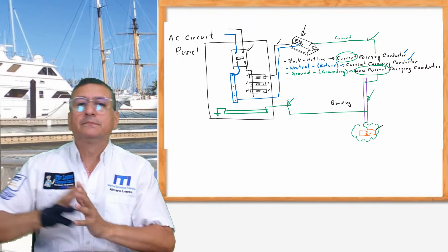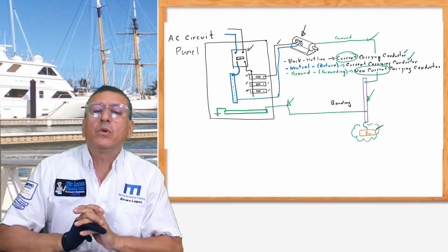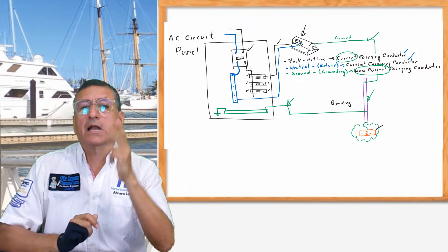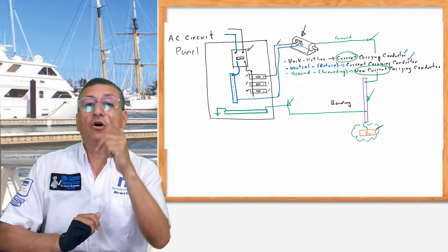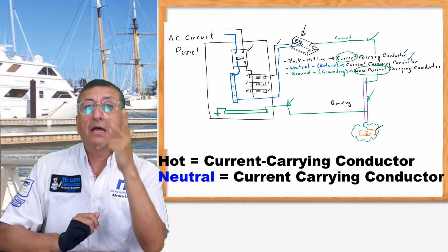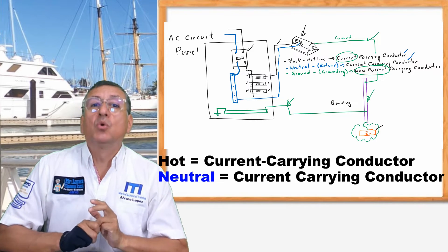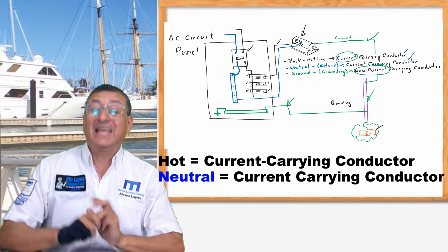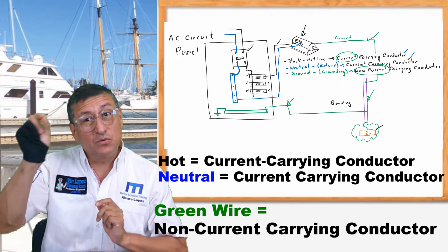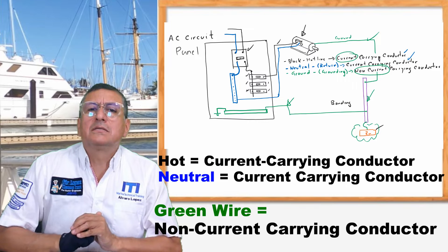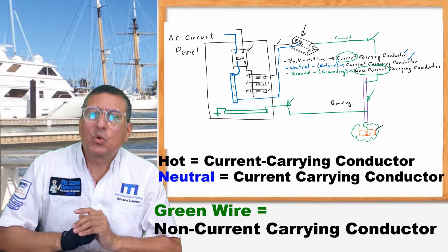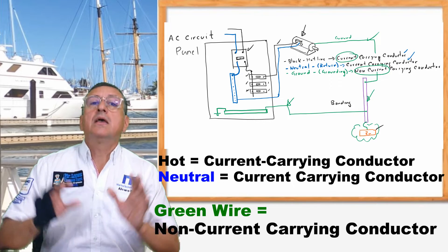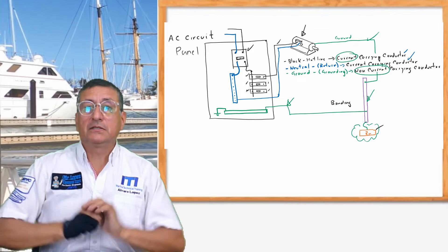On the AC side we have the hot line, neutral, and ground. The hot line and the neutral are current-carrying conductors. The ground connected to the grounding is a non-current-carrying conductor. Both bus bars are different.